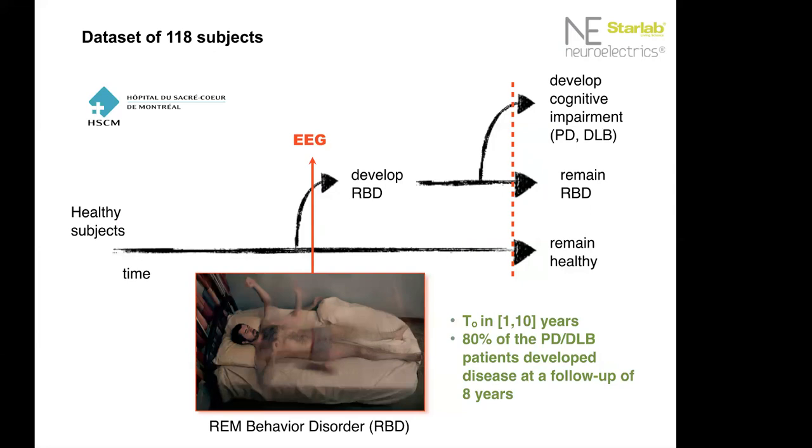So in the data set that we were lucky to have access to, thanks to the work at Montreal, we have a data set of people who went at some point to the hospital and they had an EEG taken, and their only symptoms were REM behavior disorder. They didn't have any other symptoms of, say, Parkinson's or Lewy body dementia or any kind of these pathologies that I will talk about in a moment.